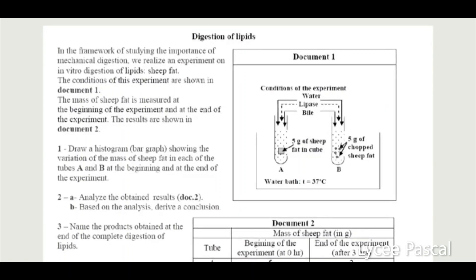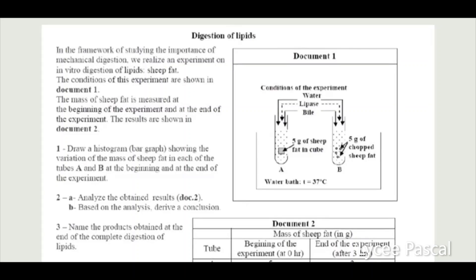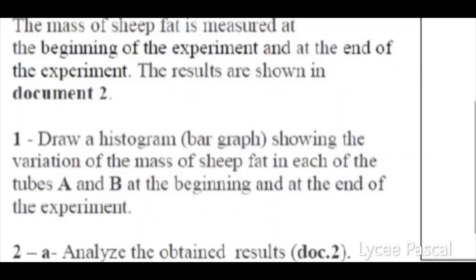At the beginning of the experiment, both tubes contain the same amount of sheep fat — five grams. At the end of the experiment, the amount of sheep fat in tube A decreased from five to two grams, while in tube B it disappeared completely.